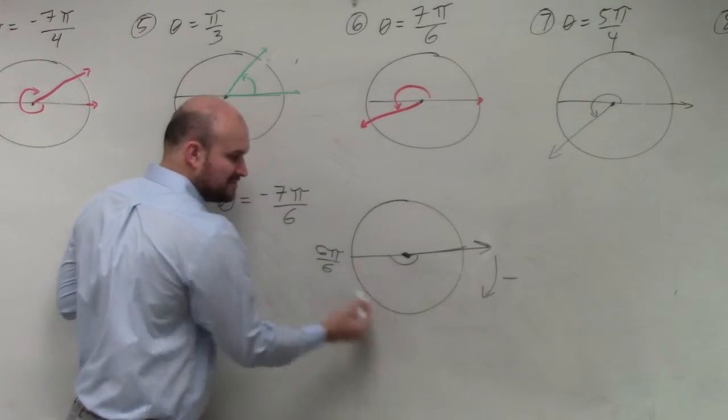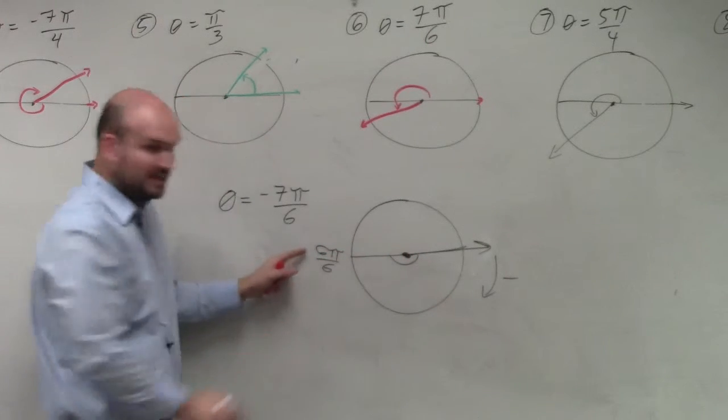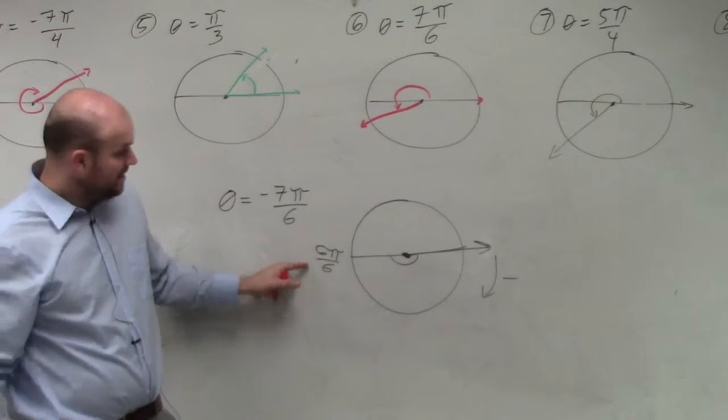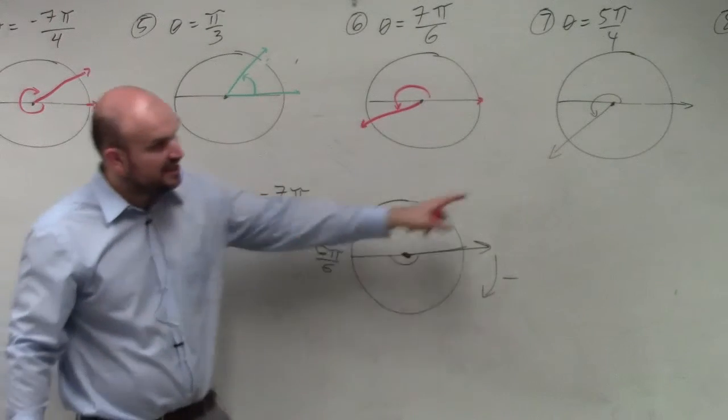Just remember, the negative just tells us we're going in a negative direction. So crossing half of a circle is really 6 pi over 6, correct? And all we're doing is going 7 pi over 6. The negative just tells us the direction.